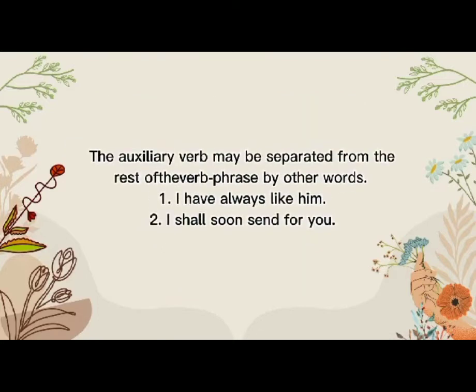The auxiliary verb may be separated from the rest of the verb phrase by other words. For example: 'I have always liked him' — 'have' is the auxiliary verb that supports the main verb 'like.' And 'I shall soon send for you' — 'shall' is the auxiliary verb that supports the main verb 'send.'